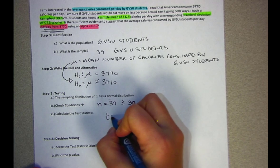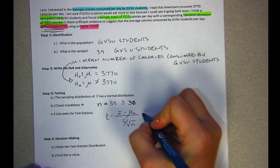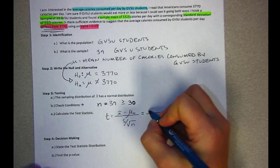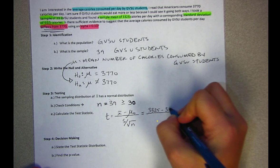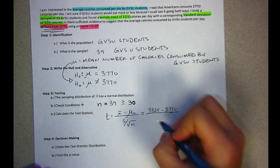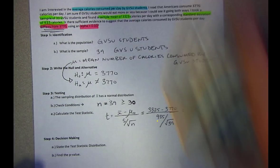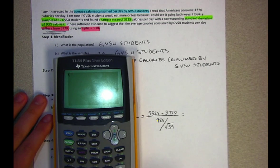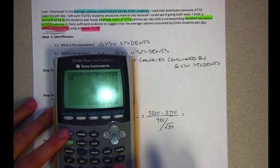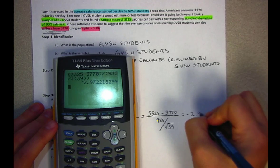Then we'll calculate our test statistic. To remind you of the formula we have X-bar minus mu₀ or the null value divided by standard error. Plugging in the numbers, X-bar is 3325, our null value is 3770, I have a standard deviation of 935 and a sample size equal to 39. I'll enter that all at once. The numerator will get parentheses around it and then the denominator will also. So I come up with a test statistic of negative 2.97.